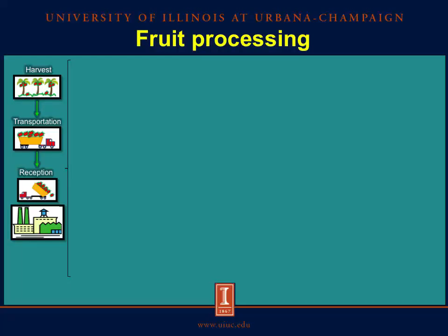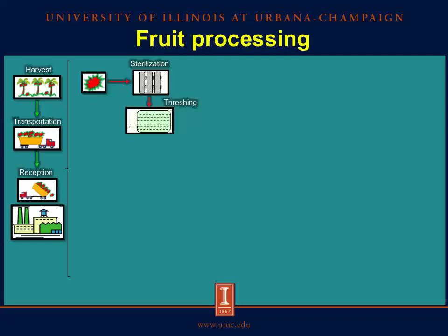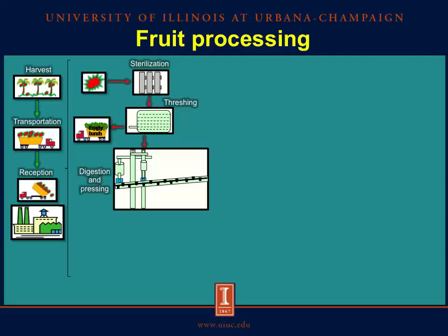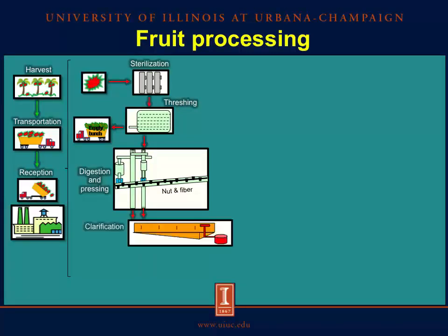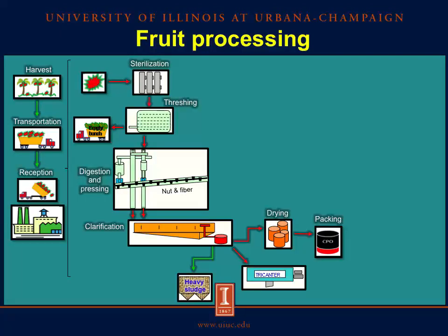This process starts with the harvest of the fruit bunches, their transportation, and delivery to the oil palm factory. Once there, bunches are sterilized in an autoclave, then palm fruit is separated from the bunch, and the empty bunch is collected to be used as fertilizer or source of energy. Free fruits then undergo digestion and pressing processes to obtain a mixture of oil, water, and solid impurities, and the pressed cake of nut and fiber. The mixture is then clarified to obtain oil, oily light sludge, and heavy sludge. The oil is dried by vacuum drying and pumped to a tank for storage. The oily light sludge goes to a decanter which produces more oil, water, and the decanter cake — our first byproduct.